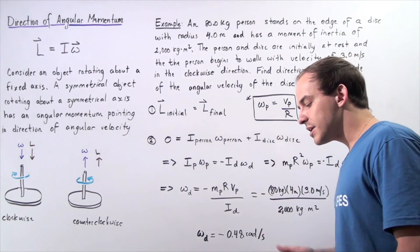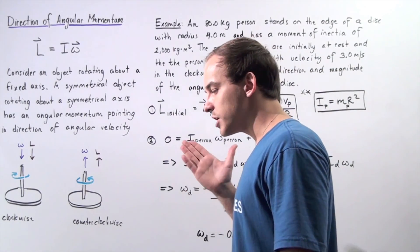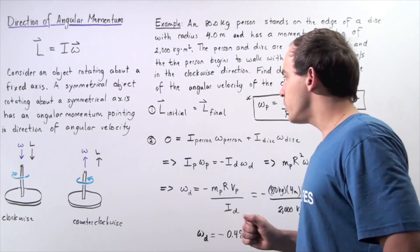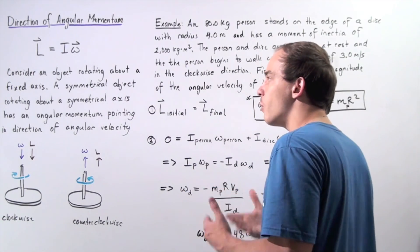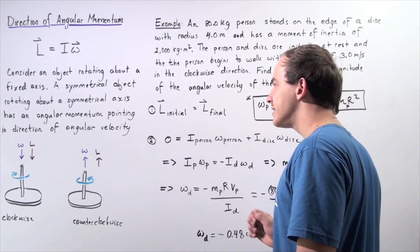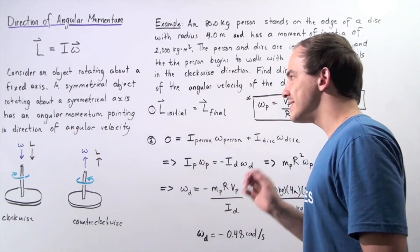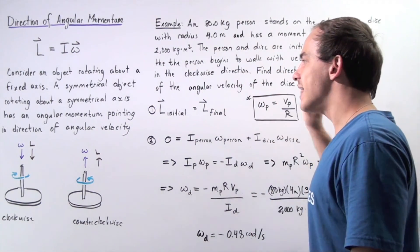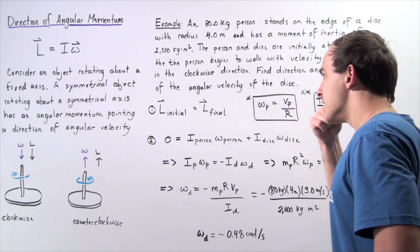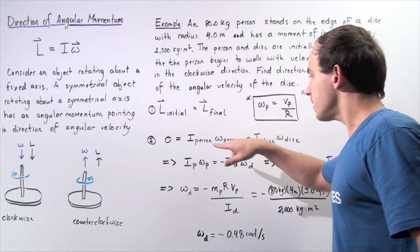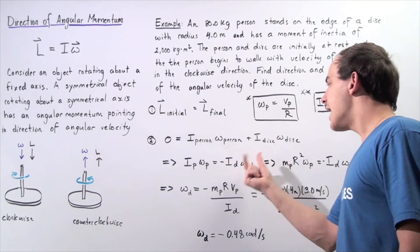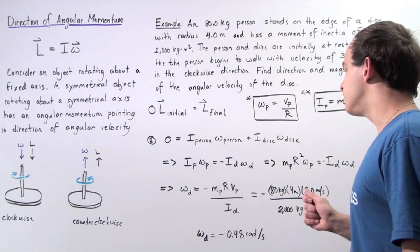We apply conservation of angular momentum, assuming the external net torque acting on the two objects is zero. So the initial sum of angular momentum of the two objects equals the final sum of angular momentum. Our initial angular momentum is zero because the objects are not moving initially. After the two objects begin to move, we use the following formula: the moment of inertia of the person multiplied by omega of the person, plus the moment of inertia of the disk multiplied by omega of the disk.